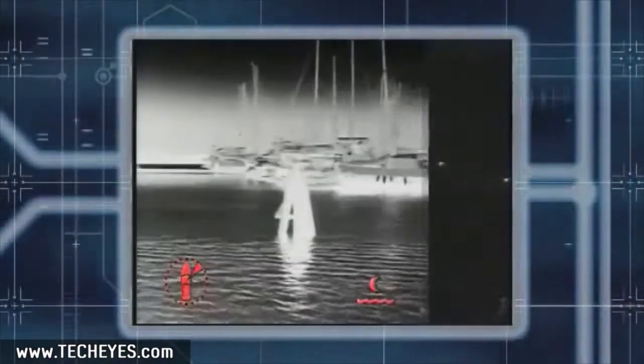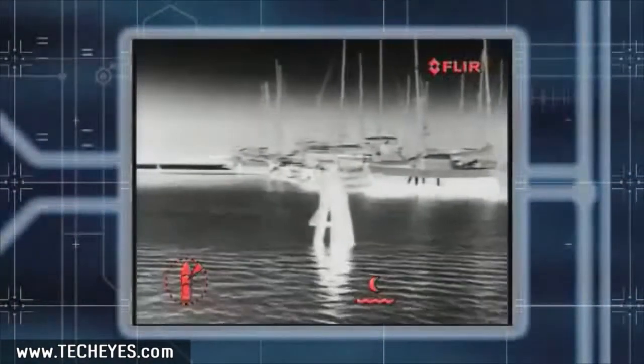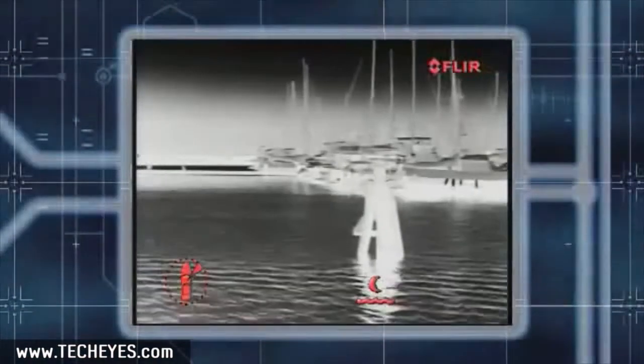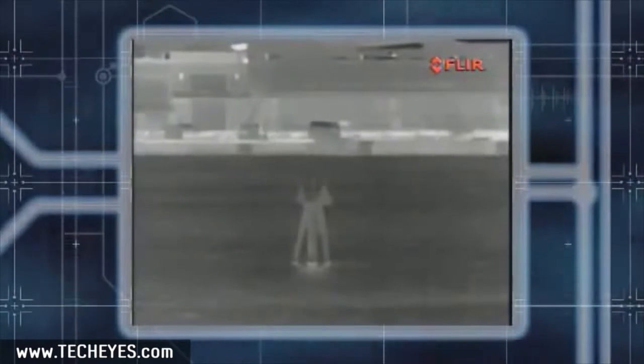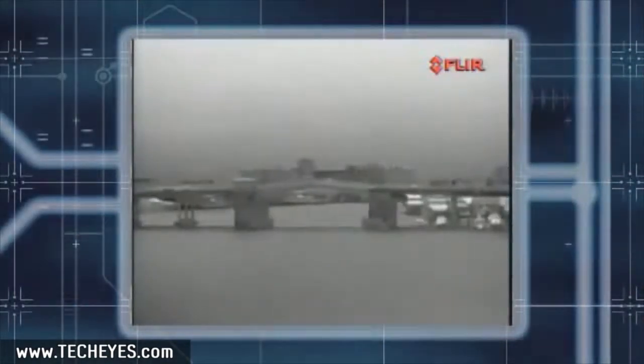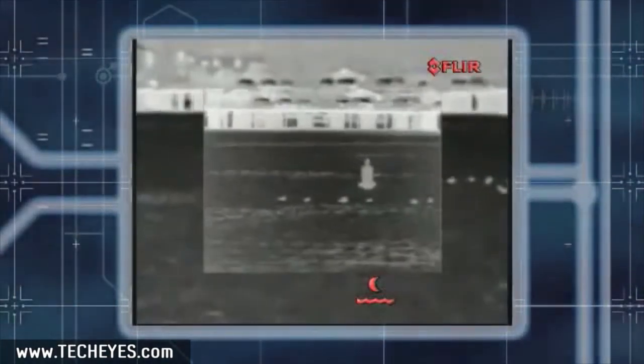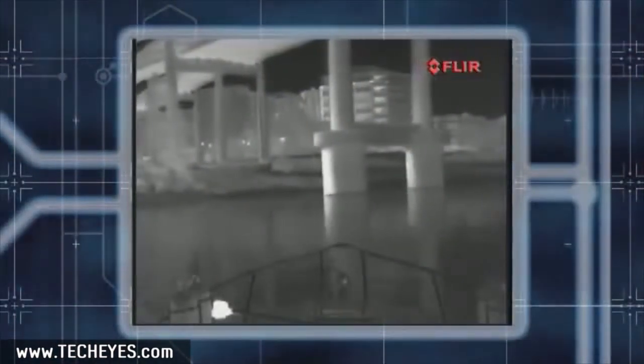The Voyager 2 thermal imaging system makes nighttime boating safer and more enjoyable. With Voyager 2, you'll be able to see channel markers, landmarks, other vessels, floating debris, and obstacles like bridge abutments.